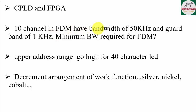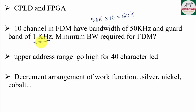One FDM question asked: if each channel has a bandwidth of 50 kHz and there are 10 channels, that gives 500 kHz. Each channel is separated by a guard band of 1 kHz. For 10 channels, you need 9 guard bands, which is another 9 kHz. So the minimum bandwidth required for FDM is 509 kHz.